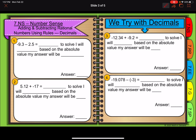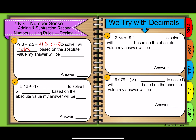We're going to take a look at this with decimals first. The same process applies: I have to take subtraction and change it to addition of the opposite. Here I have negative 9 and 3 tenths minus 2 and 5 tenths. This changes to negative 9 and 3 tenths — remember, our starting number doesn't change — plus negative 2 and 5 tenths. To solve, I will add because it's two negatives, so we use the same sign rule.